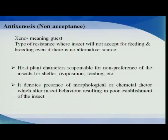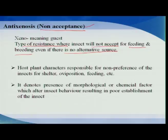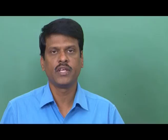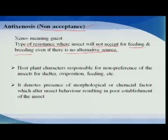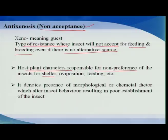What is anti-xenosis? Anti-xenosis can be simply defined as non-acceptance — it is a type of resistance where an insect will not accept a plant for feeding and breeding, even if there is no alternative source. The plant has certain mechanisms or characters which totally avoid colonization of the insect, and even if there is no alternative, the insect cannot establish on it. This mainly involves the presence of morphological or chemical factors which alter behavior, resulting in poor establishment of the insect.